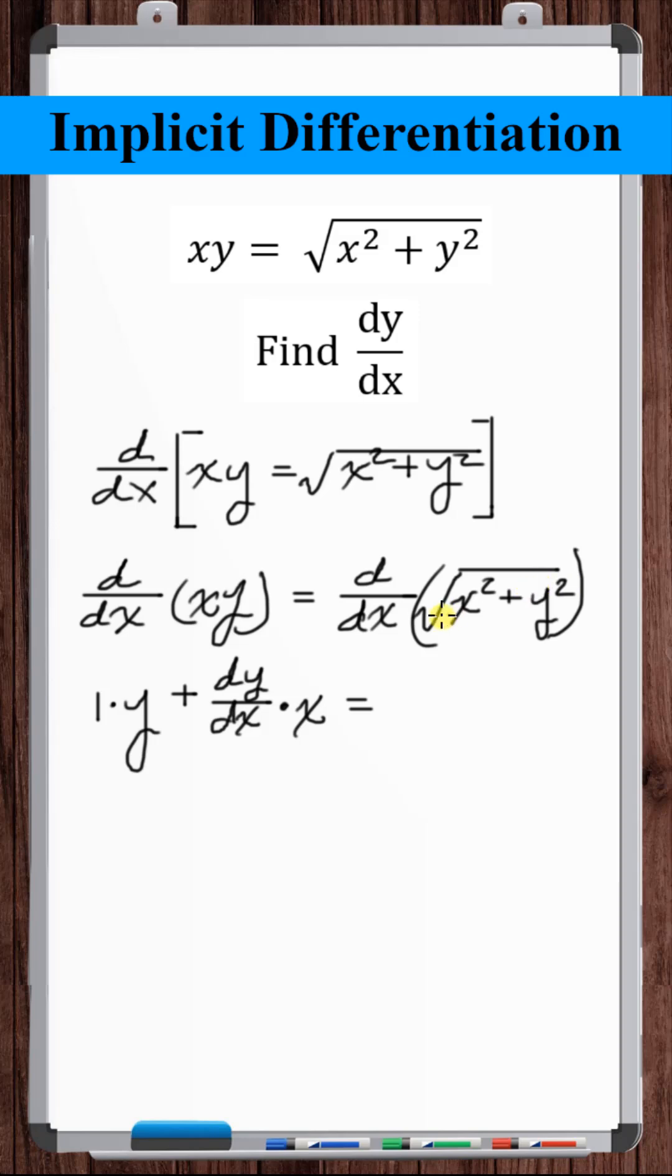The right side uses chain rule. The derivative of the square root of something is one over two times the square root of that something times the derivative of that something. Derivative of x squared with respect to x is 2x. Derivative of y squared with respect to x, chain rule again.